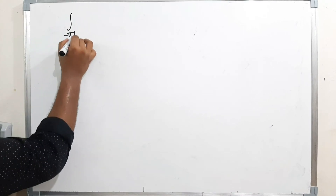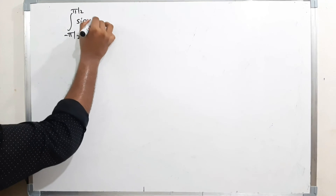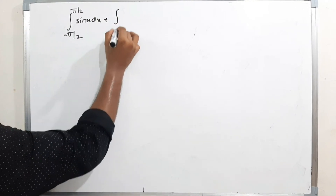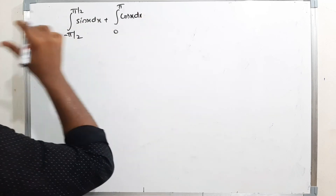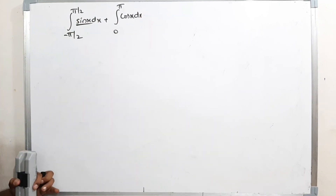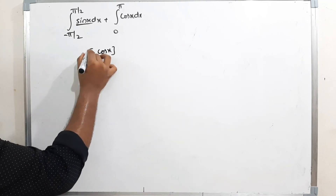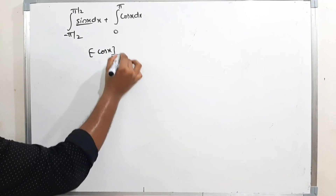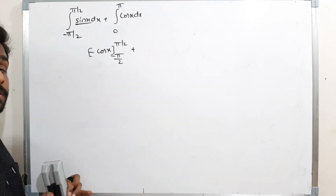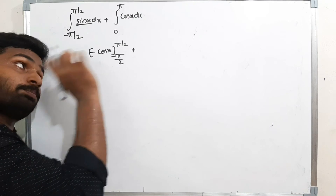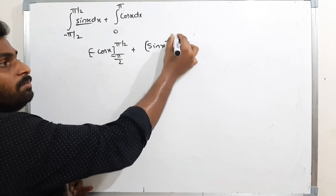Next problem: integration from -π/2 to π/2 of sin(x) dx plus integration from 0 to π of cos(x) dx. The integration of sin(x) is -cos(x), with limits -π/2 to π/2. The integration of cos(x) is sin(x), with limits 0 to π.